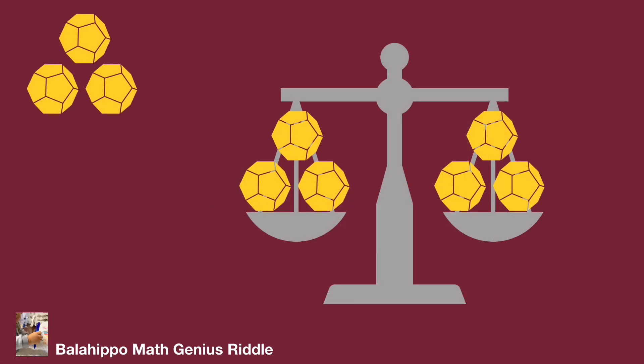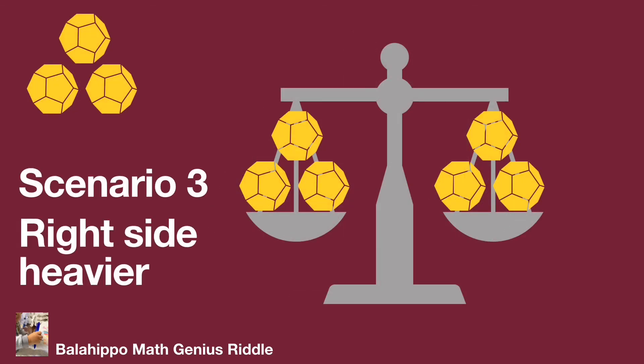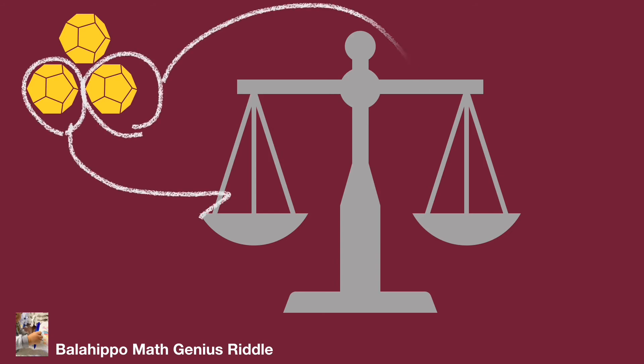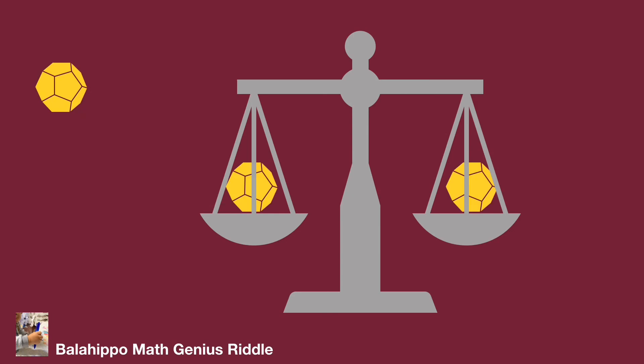Scenario three: if the right-hand side is heavier, then the heavier ball must be in that group. Same process as scenario two — weigh any two balls from the group, and you can find the heavier ball.